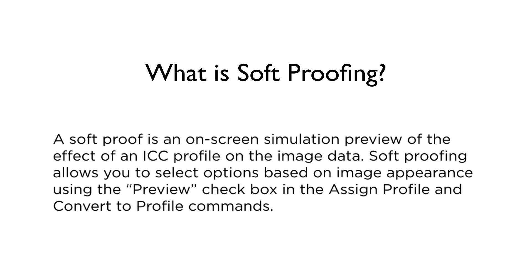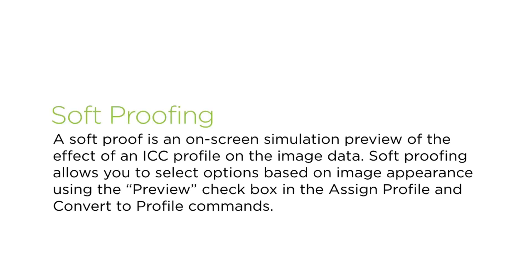Let's talk about Soft Proofing. A Soft Proof is basically an on-screen simulation of what the image will appear as before you convert it to another color space. This is why it's so important to have our display calibrated and profiled and to use good ICC profiles. When we look at the upcoming Convert to Profile and Assign Profile commands, we'll be able to see on screen how the image is going to change based on the different parameters we use.